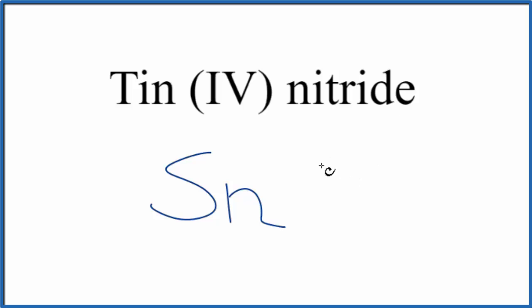And then the nitride, that's from the nitrogen, we'll just write N. So tin, we said, transition metal, and they tell us the charge here. So we know it's 4+.